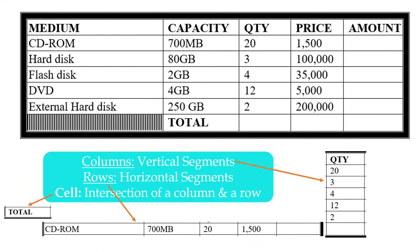So let's look at this example. Before you insert a table, it is important you always conceptualize the structure of tables. A table consists of columns and rows — columns as vertical segments and rows as horizontal segments. In our case, this table has column 1 (median), column 2 (capacity), column 3 (quantity), column 4 (price), and column 5 (amount). So there are 5 vertical segments or 5 columns in this table.